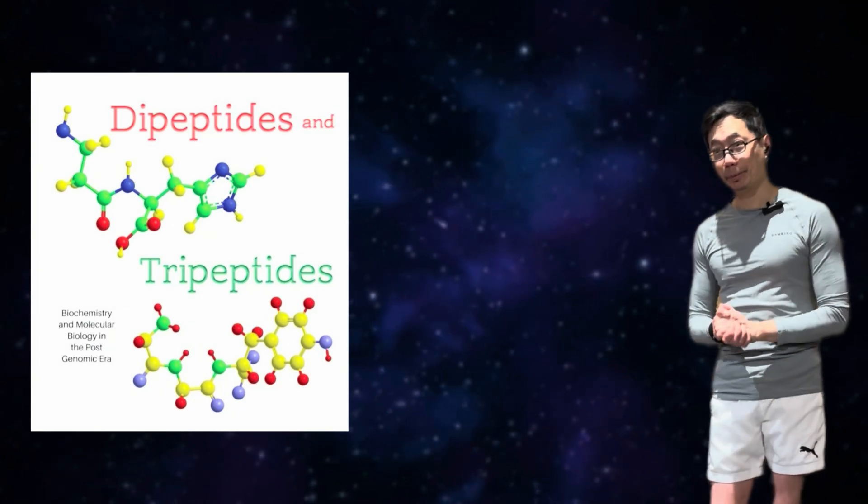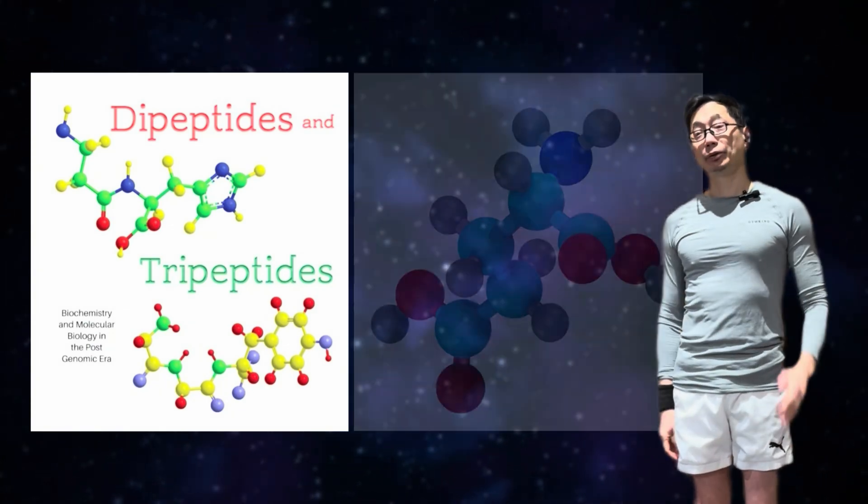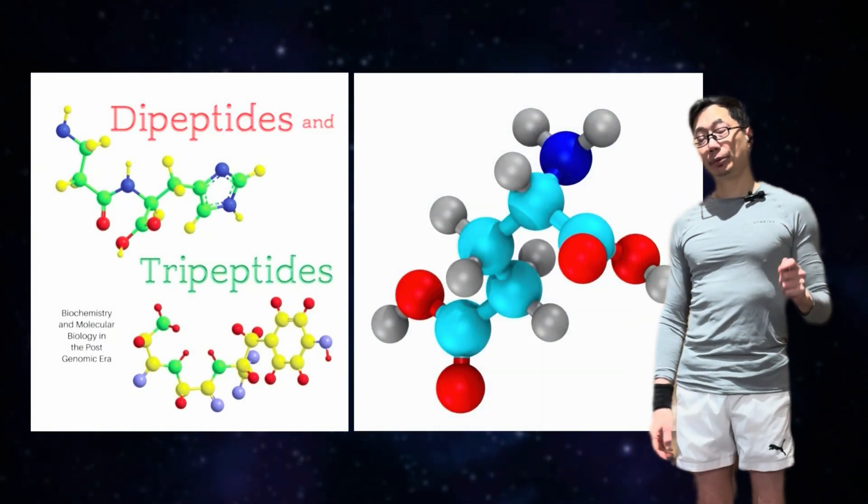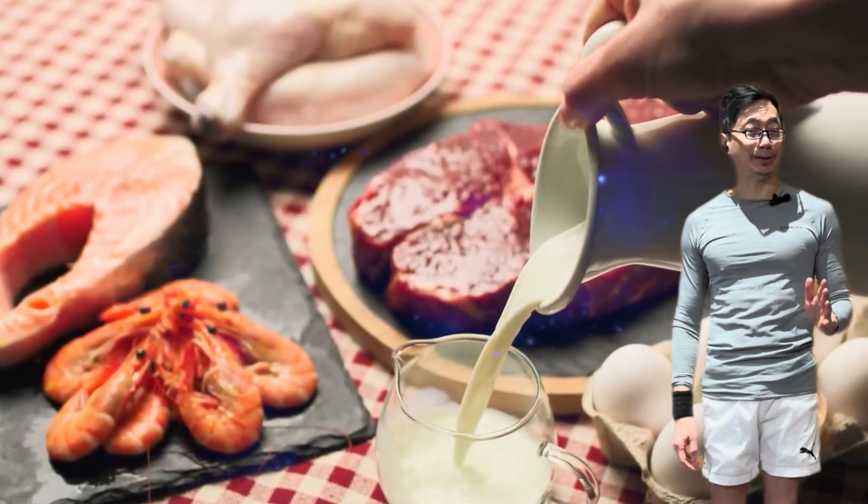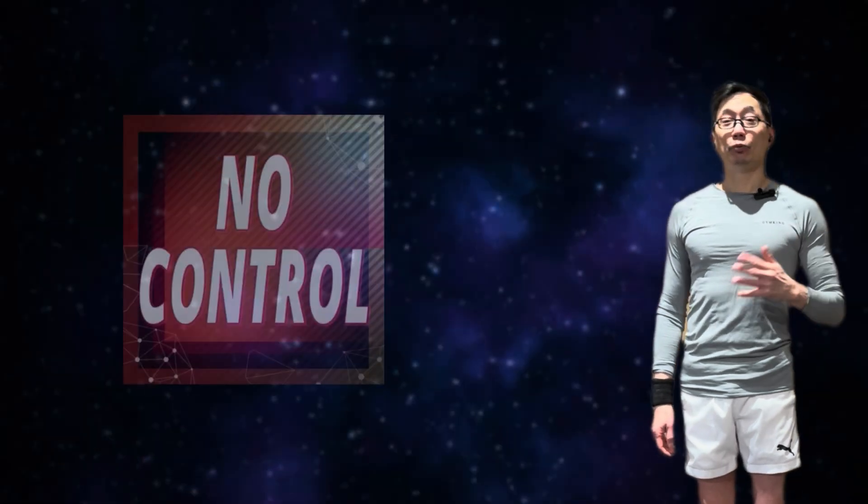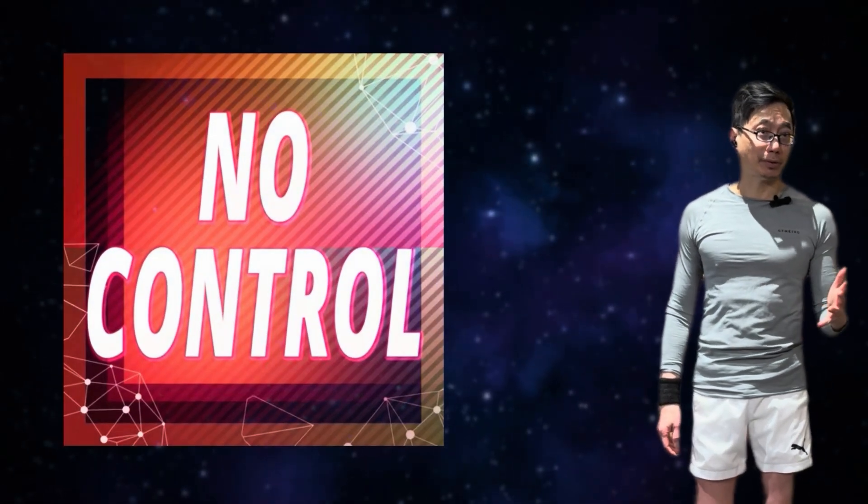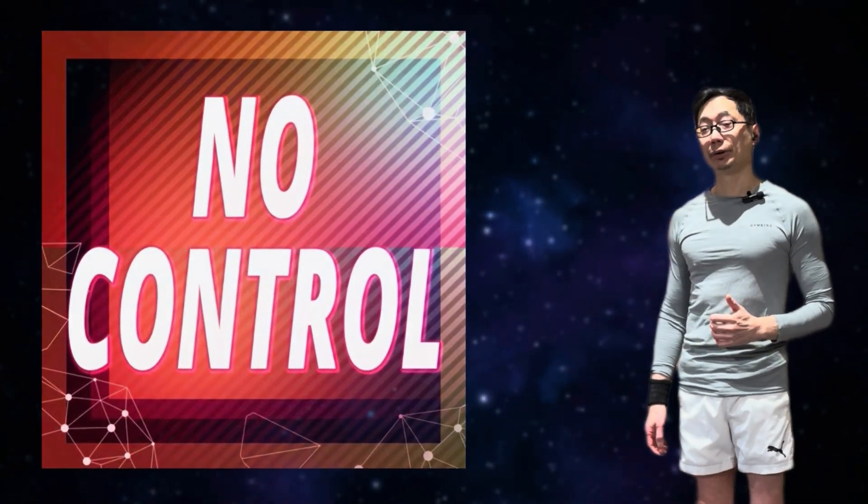But what we can absorb are very small peptides like dipeptides and tripeptides and individual amino acids. And this is going to be very important in just a moment when we talk about if the type of protein we eat even matters, and if we have any control on where these proteins can be distributed throughout our body.